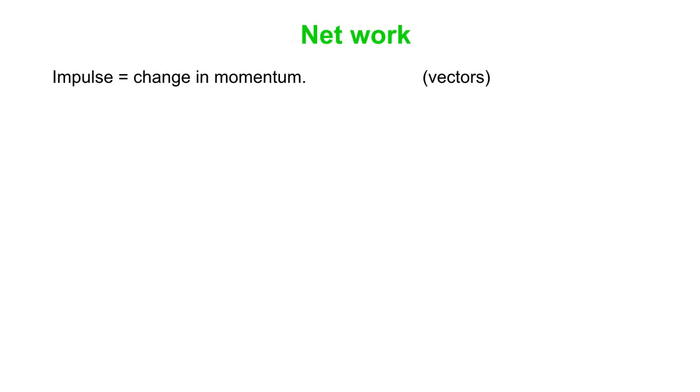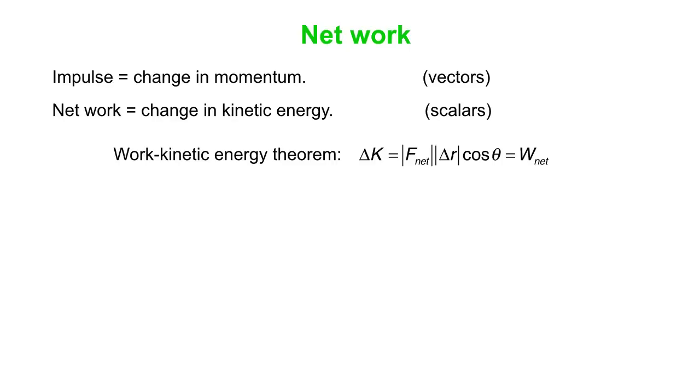Impulse is change in momentum. Those are both vectors. Net work is change in kinetic energy. Those are both scalars. Work kinetic energy theorem: delta K is the magnitude of the net force, magnitude of the displacement multiplied by the cosine of the angle between them. That's the net work.